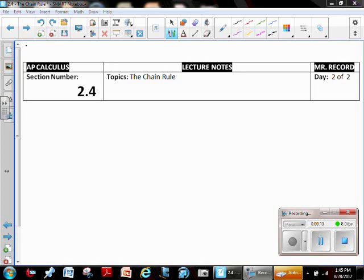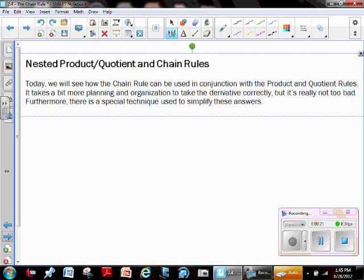The reason why is because we're going to talk about the ways that chain rules can be nested within product or quotient rules. It's quite often that the more complex kinds of functions that you deal with might very well take this form, and it takes just a little bit more planning and organization to take the derivative correctly.